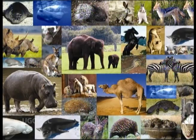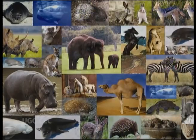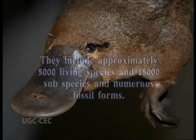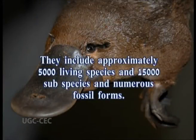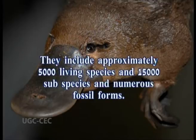Mammals have thoroughly been classified and described. They include approximately 5000 living species and 15,000 subspecies and numerous fossil forms. Today, the classification varies coming from various agencies and taxonomists, but the current classification is basically described on the basis of the following characteristics.